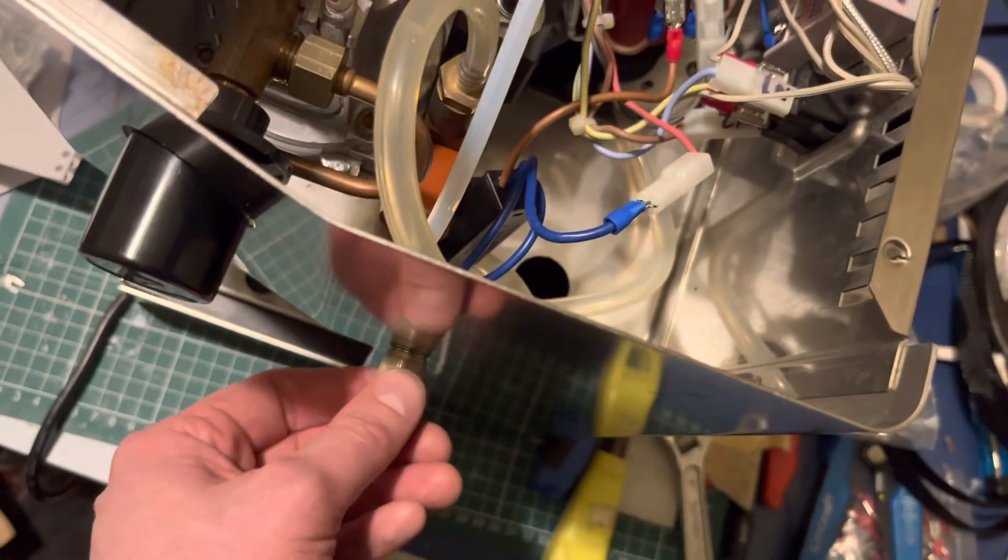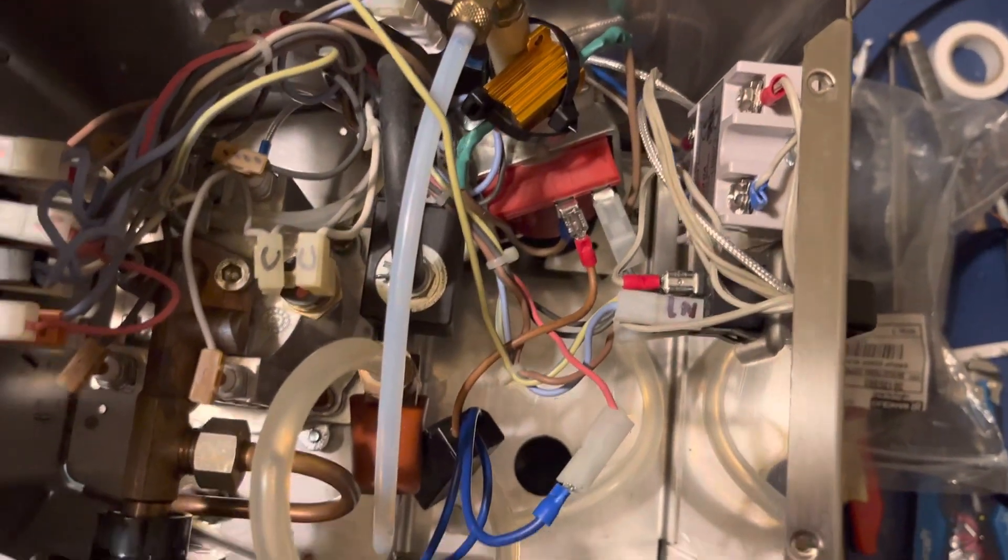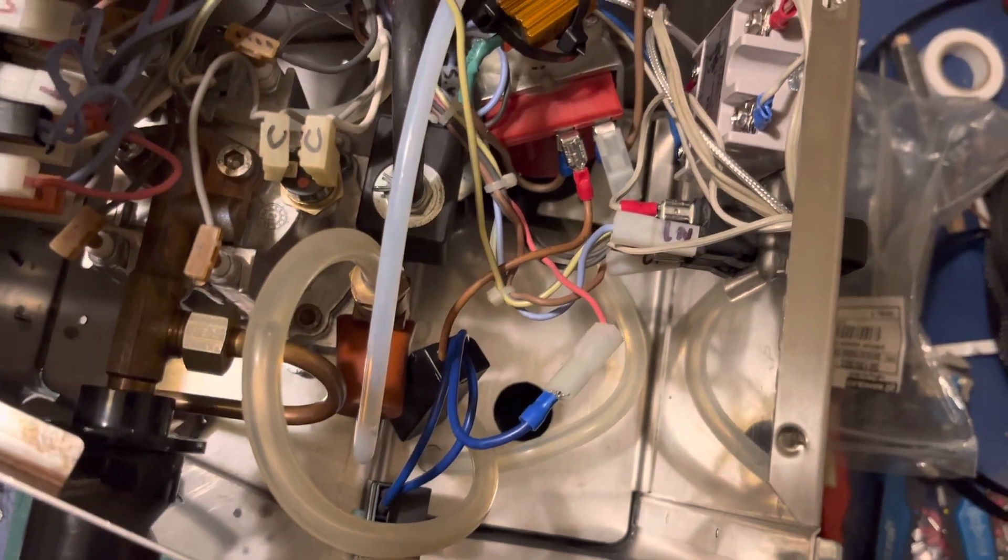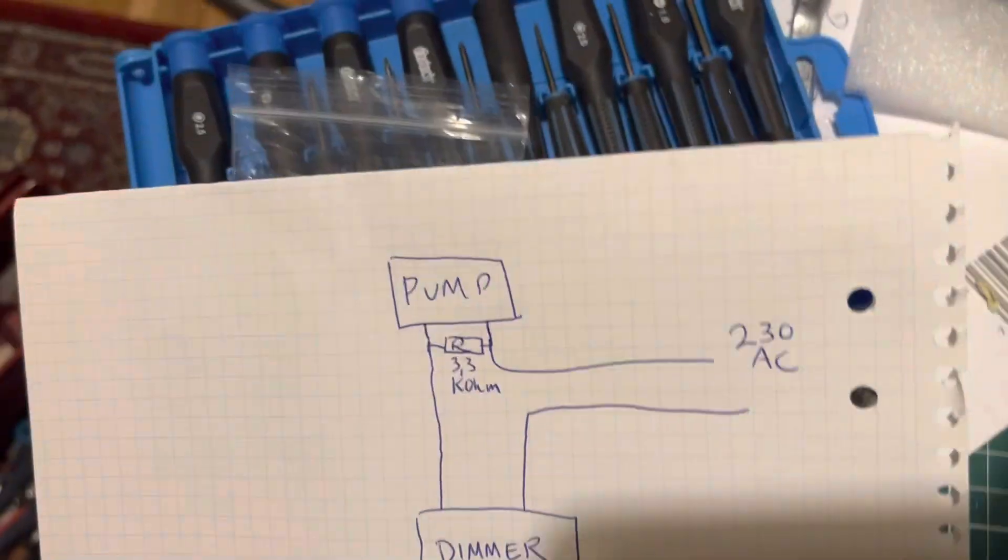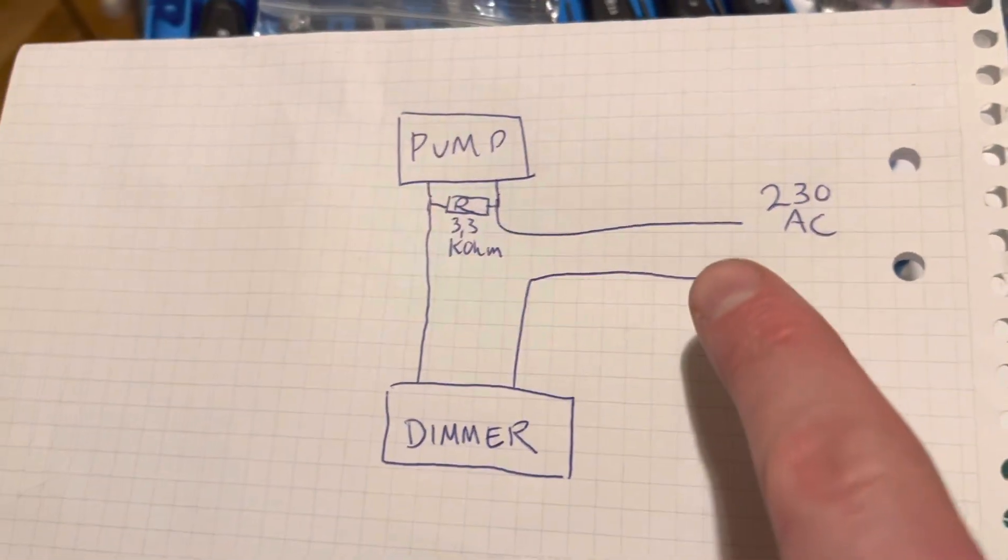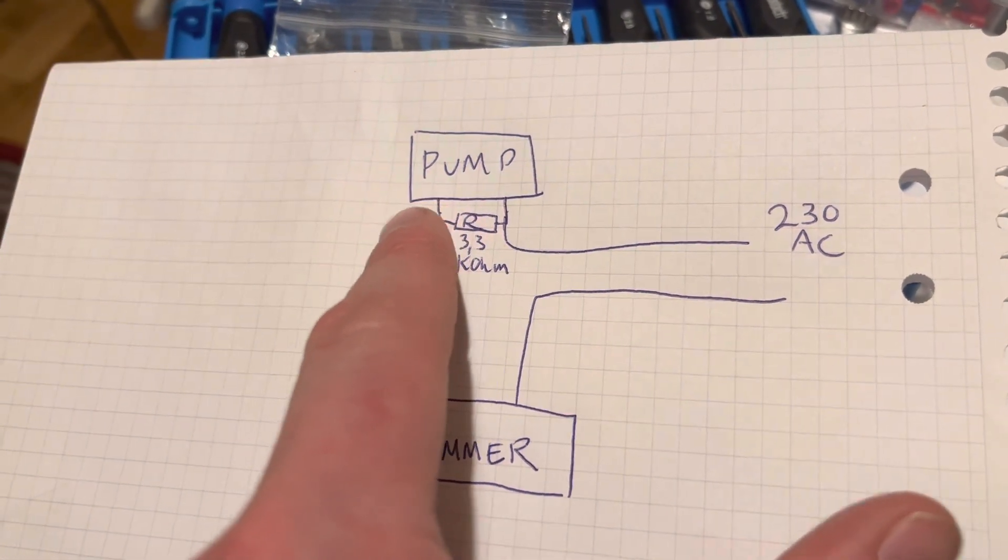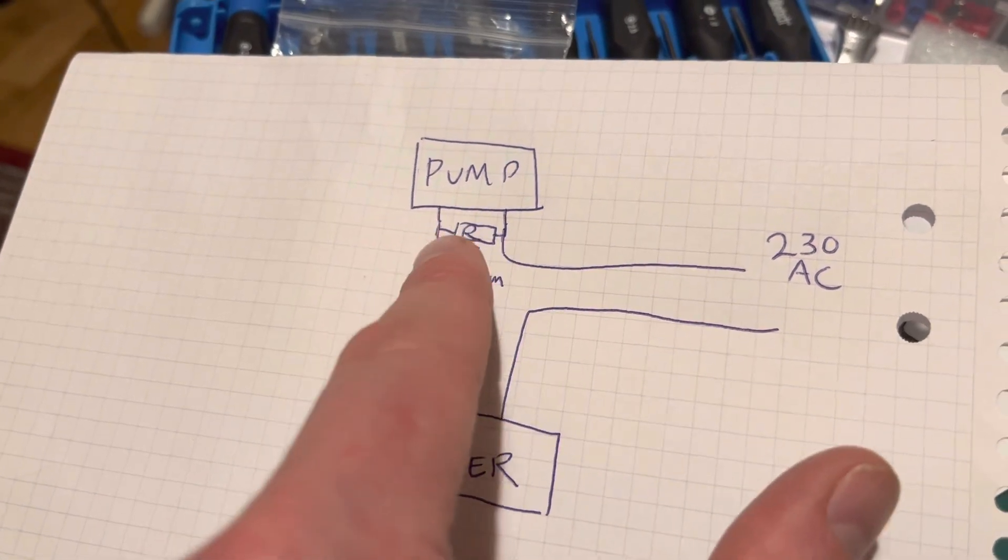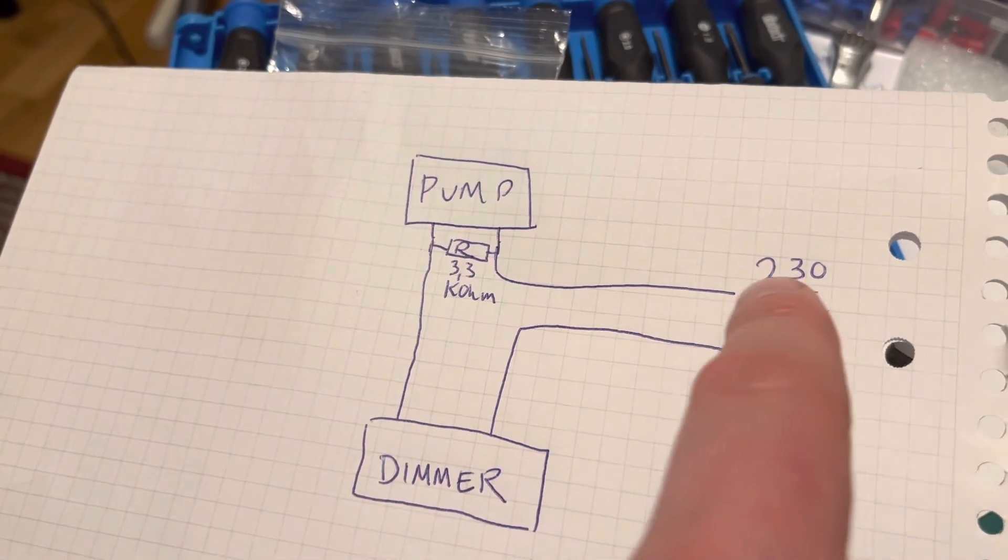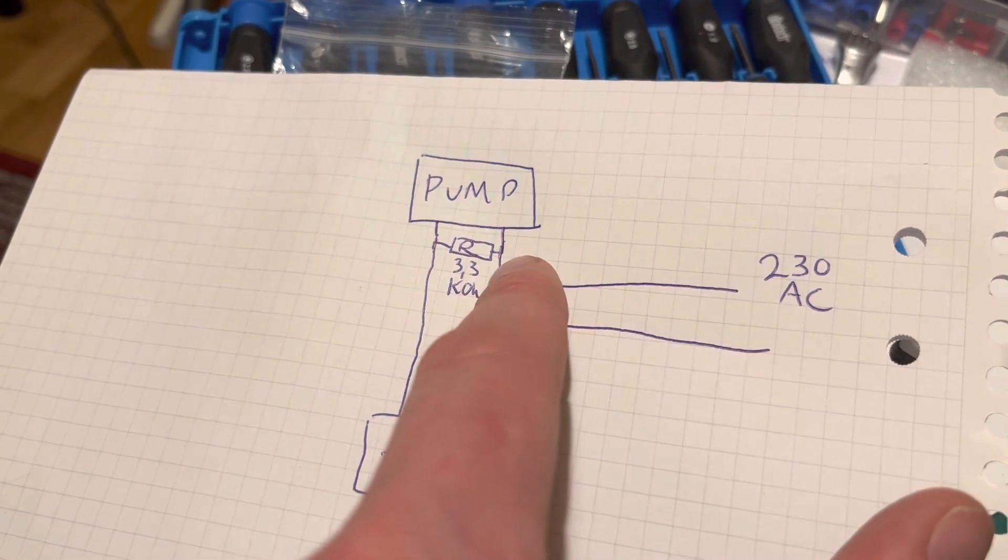Yeah, it's a bit messy but this is kind of a schematic of it. You have the voltage coming in here, passing through the dimmer, and then it goes out to the pump. This is the resistor connected in parallel, and here's the other power cable coming in.